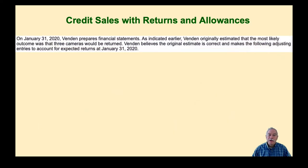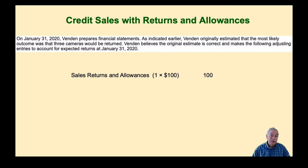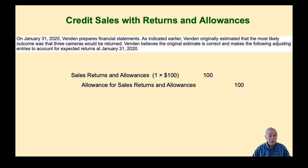On January 31st, we adjust our books as we prepare financial statements. There is one more estimated camera expected to be returned. We debit sales returns and allowances for that one camera at the selling price of $100, and credit an allowance — a second contra asset account to accounts receivable — for $100.